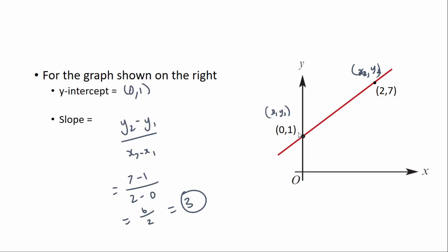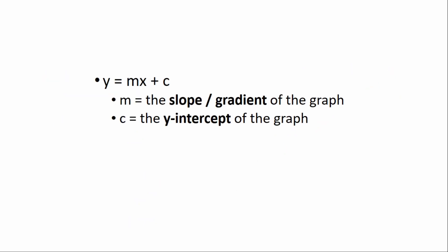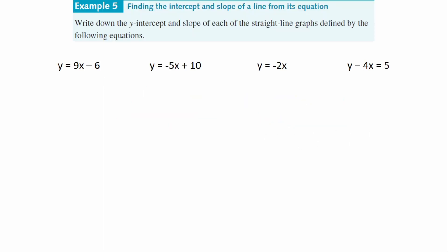So the y-intercept is where I cross the y-axis, and the gradient is 3. Make sure you've got these key points written down in your books and in your bound reference. Now we're going to use this information to answer some questions. The question says: write down the y-intercept and slope of each straight line graph defined by the following equations. Remembering that in y = mx + c, m is the gradient and c is the y-intercept. For the first one, m equals 9 and c equals negative 6. So slope equals 9 and y-intercept equals negative 6.